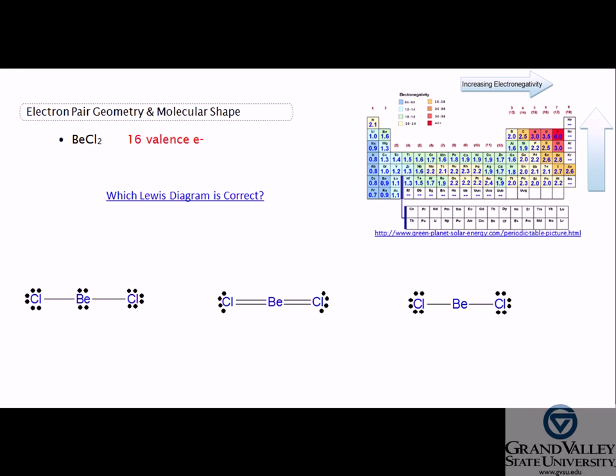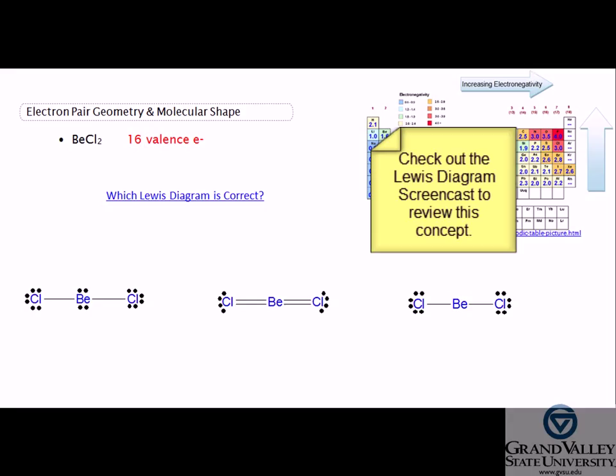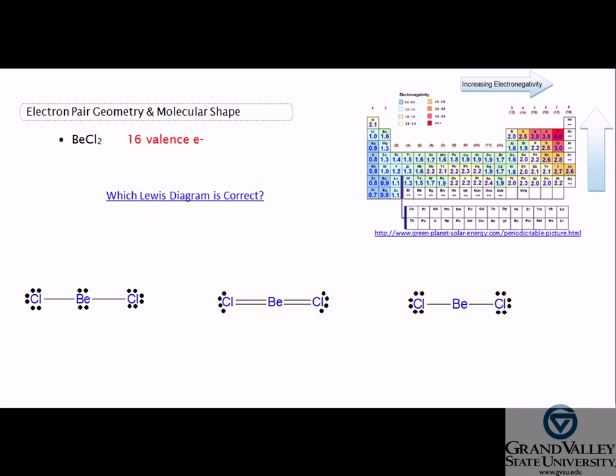Drawing a Lewis diagram for this molecule will show how the atoms are bonded and if any non-bonding pairs are present. Notice that three different Lewis diagrams are drawn for BeCl₂. Which diagram is correct?